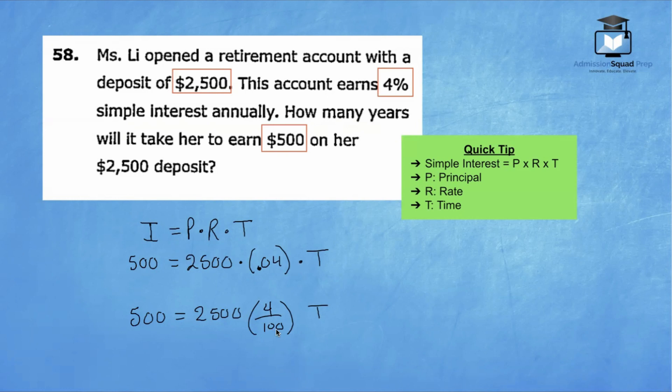We have 500 equals 2,500 times 4 over 100, which is basically 4% times T. I noticed that the denominator here has a factor of 100 and 2,500 also has a factor of 100. The shortcut way to think about this is if there's a zero in the denominator and a zero in the numerator, you can cancel them out. But guess what? There's two zeros. So both zeros are going to cancel out with one another, which basically means you're dividing both 100 and 2,500 by 100. So 100 divided by 100 is 1 and 2,500 divided by 100 is 25.